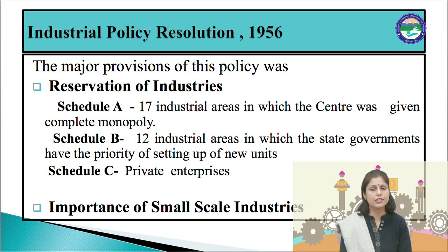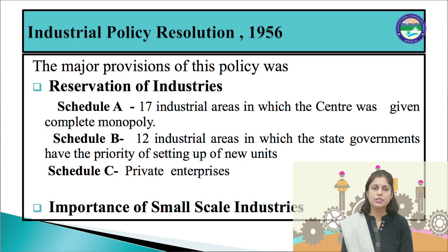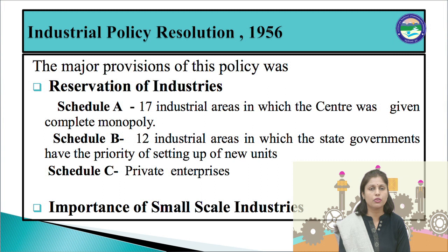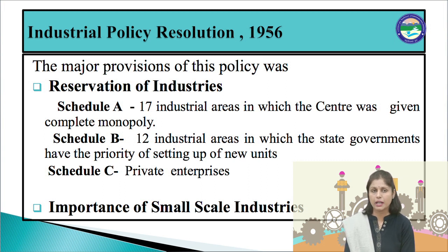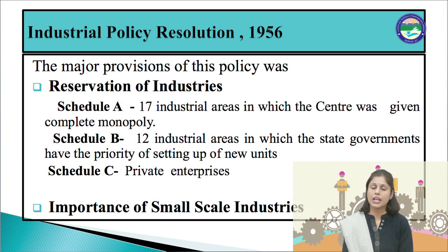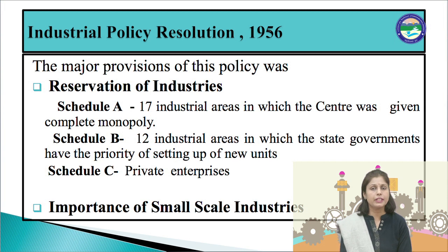Schedule C included all industrial areas left out of Schedule A and B, in which private enterprises had the provision to set up industries. Many of them had the provision of licensing and necessarily had to fit into the framework of the social and economic policy of the state, subject to control and regulation under the Industrial Development Regulation Act and other relevant legislations. Further, the industrial policy of 1956 for the first time emphasized the role of small-scale industries in the development of the national economy and pointed out the importance of the small-scale industrial sector in providing employment.